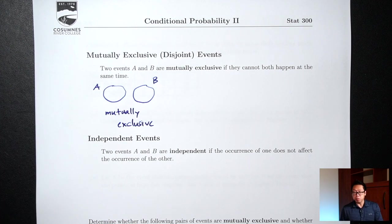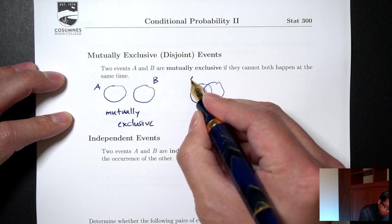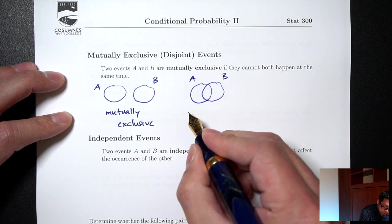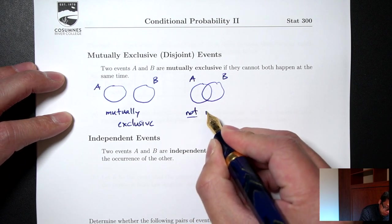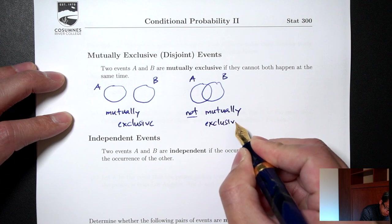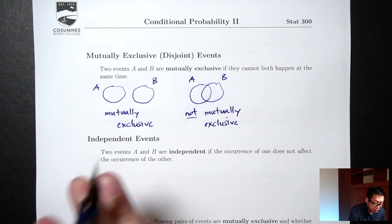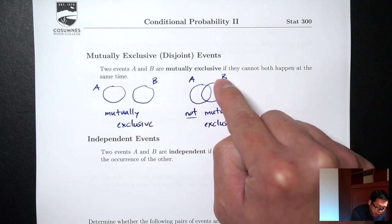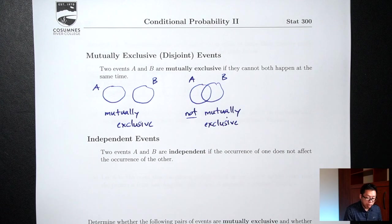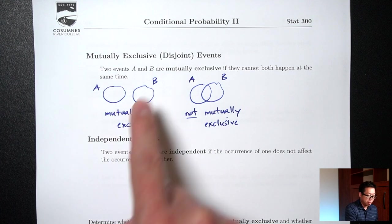The representation for not mutually exclusive would be two circles that do overlap. In this picture, there is a way for you to be in both circles at the same time. If you are in the overlapping area, then you are in circle A and at the same time you're in circle B. That's why sometimes mutually exclusive is called disjoint — the two circles are disjoint.